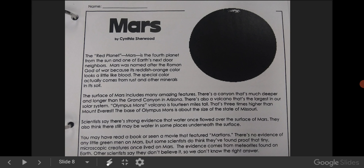Mars. The red planet, Mars, is the fourth planet from the sun and one of Earth's next door neighbors. Mars was named after the Roman god of war because its reddish-orange color looks a lot like blood. The special color actually comes from rust and other minerals in its soil.